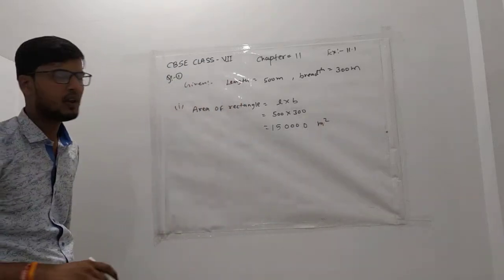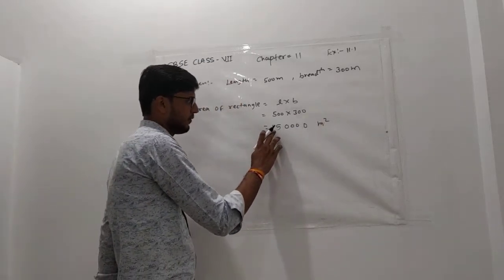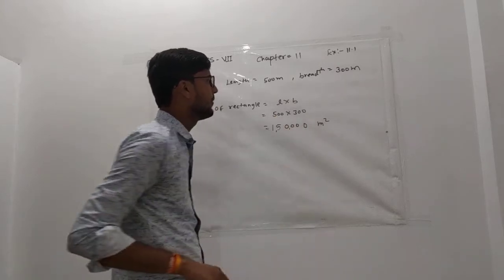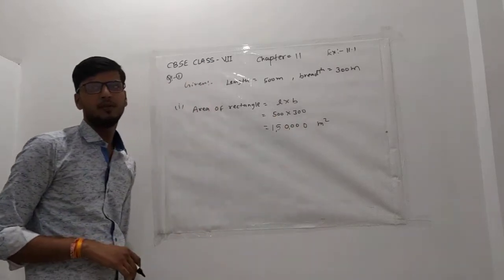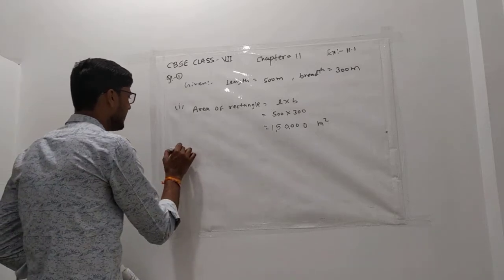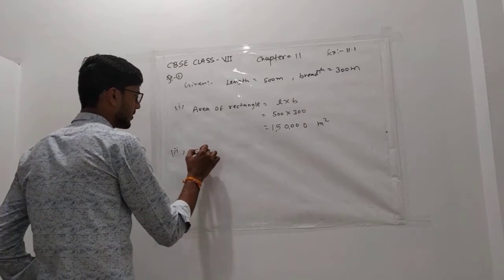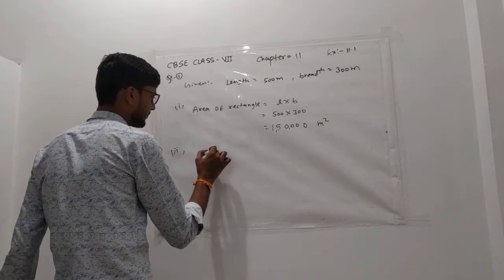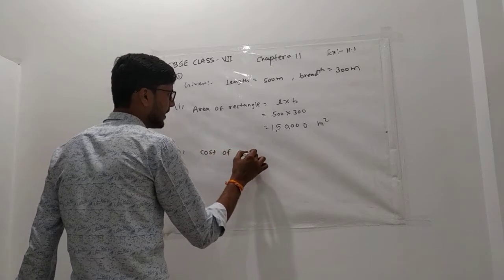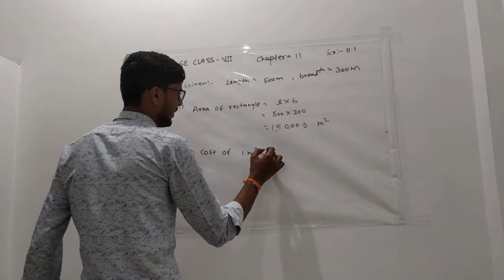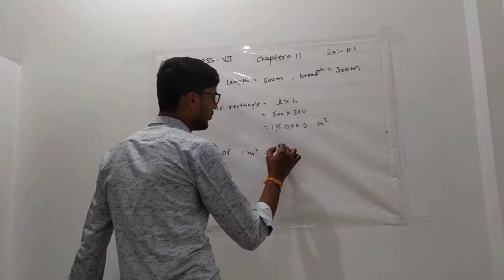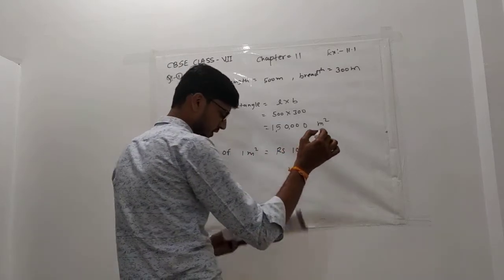Area of rectangular land is 1,50,000 meter square. Now for the second part, cost of one meter square is rupees 10,000.